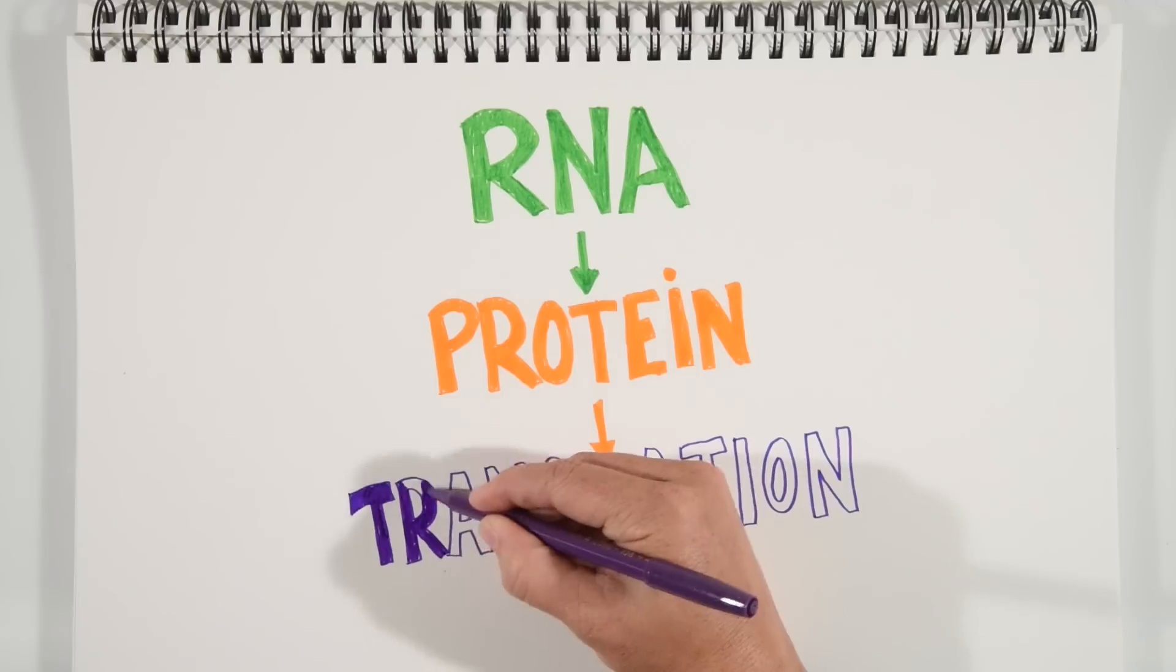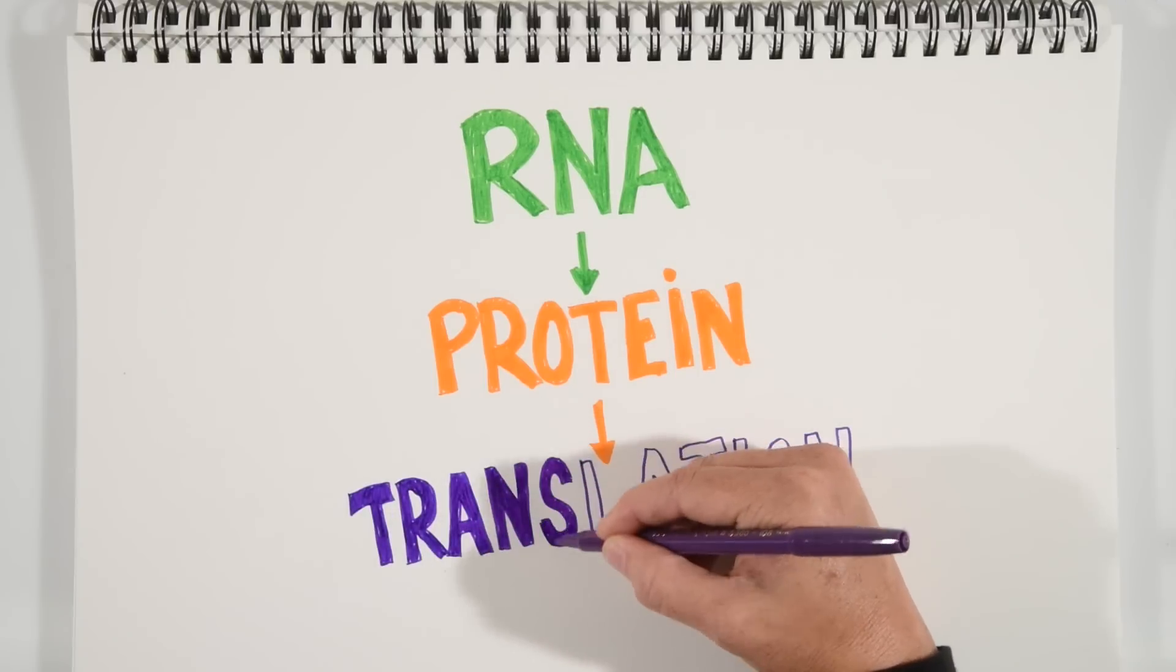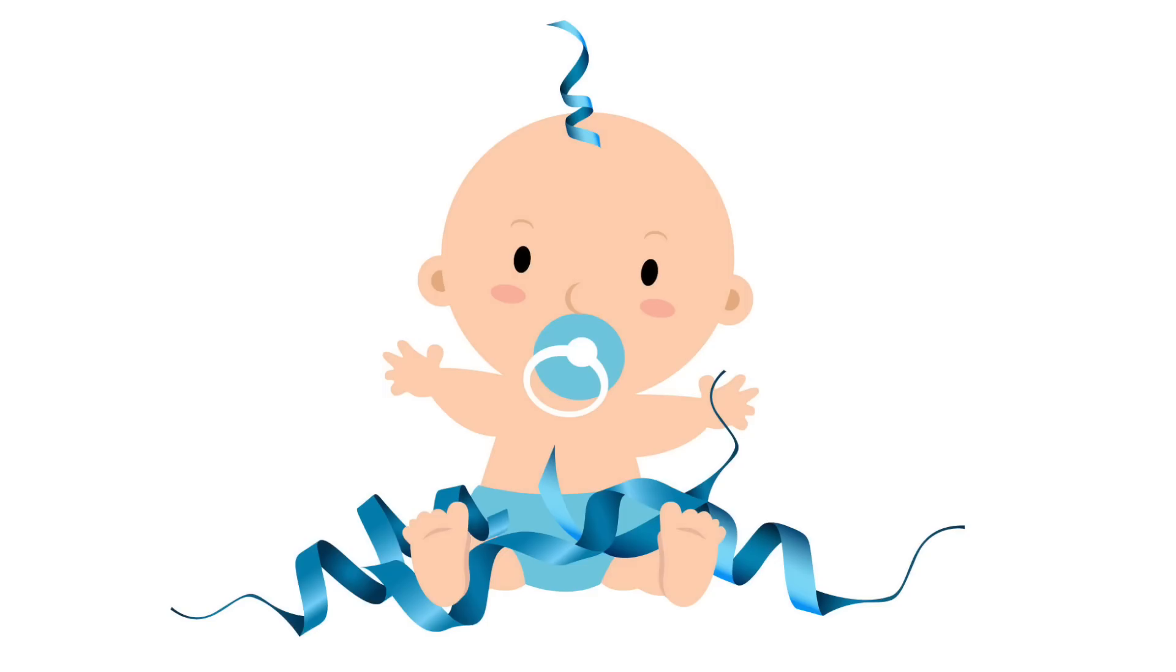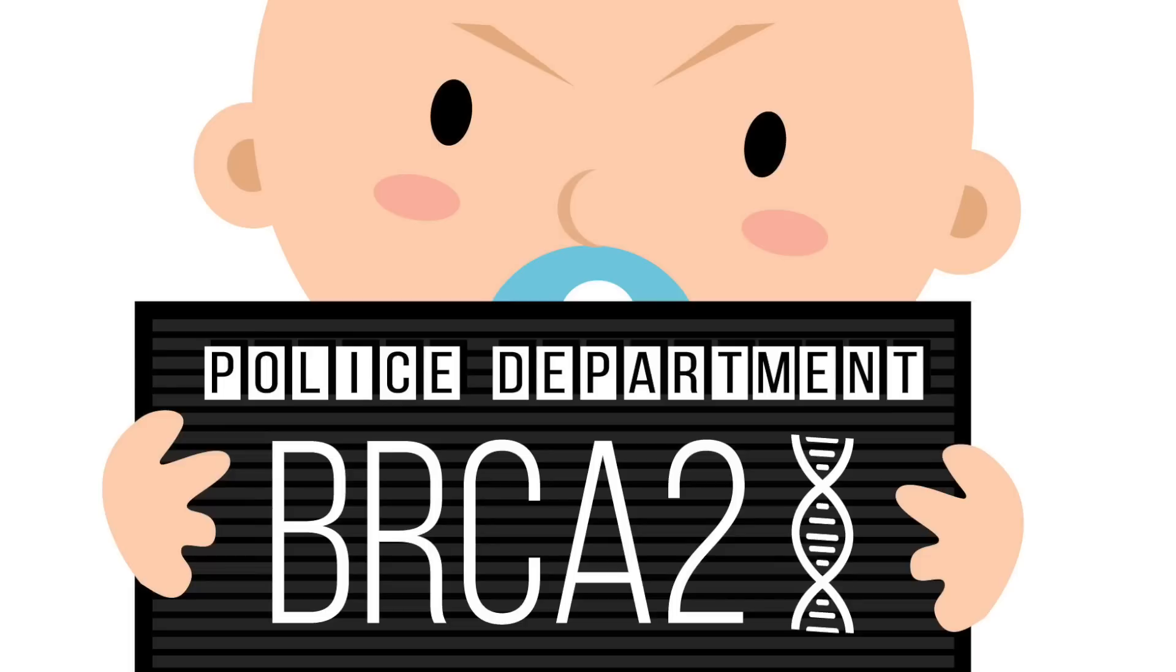That second step in gene expression is called translation. It's the exact moment a protein is born, and it's one of those moments when genes can misbehave.